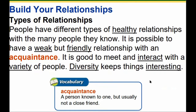People have different types of healthy relationships with the many people they know. It is possible to have a weak but friendly relationship with an acquaintance — a person known to one but usually not a close friend. It is good to meet and interact with a variety of people. Diversity keeps things interesting.